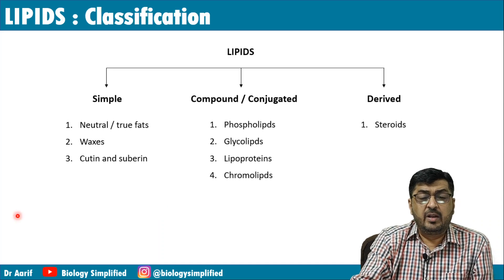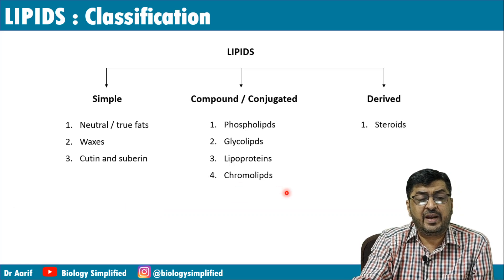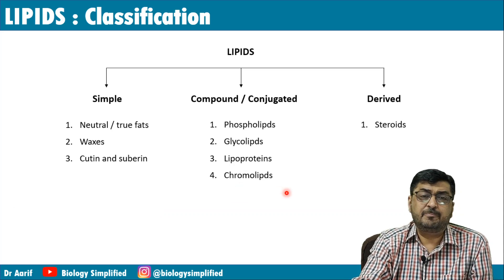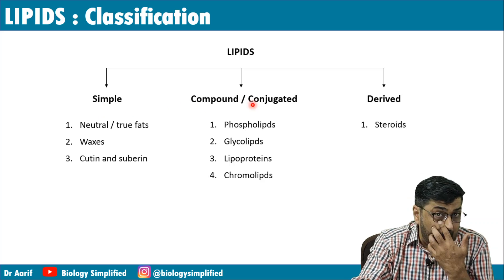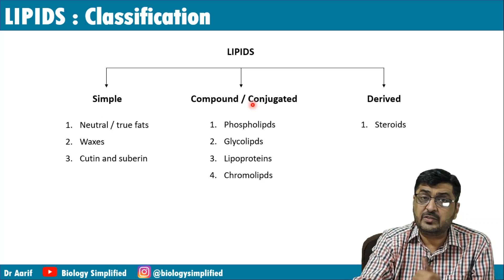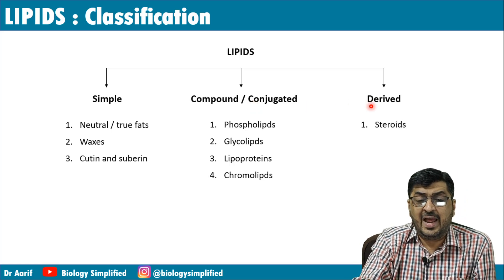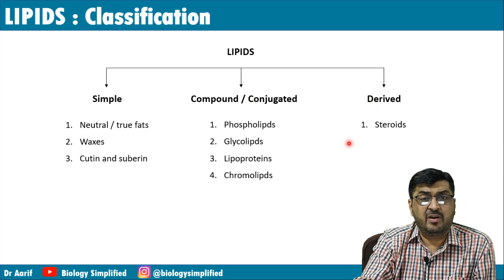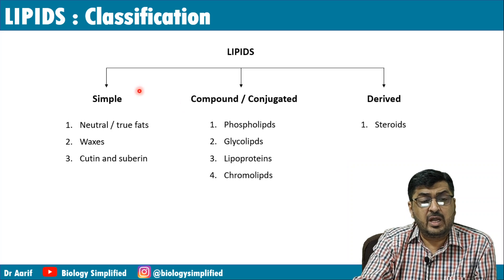Lipids are classified into three categories: simple lipids, compound (also called conjugated) lipids — similar to conjugated proteins — and derived lipids.